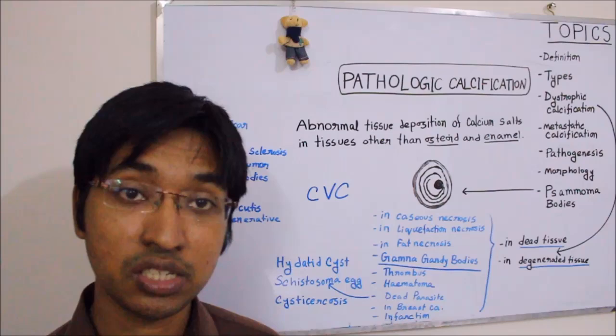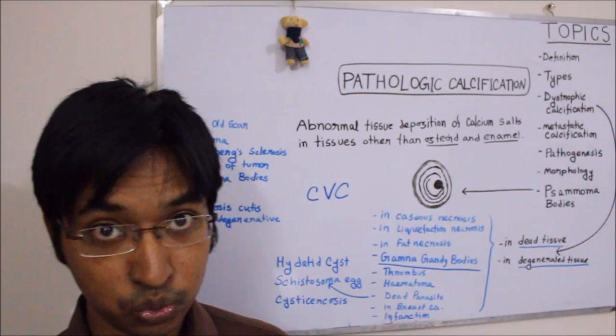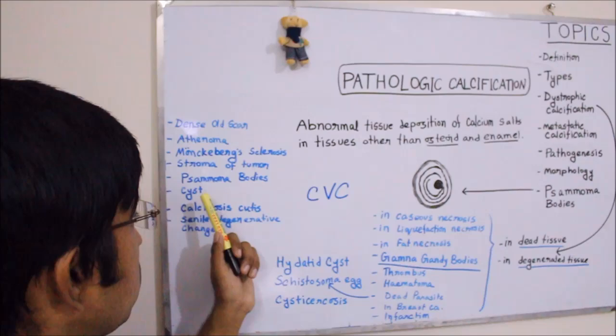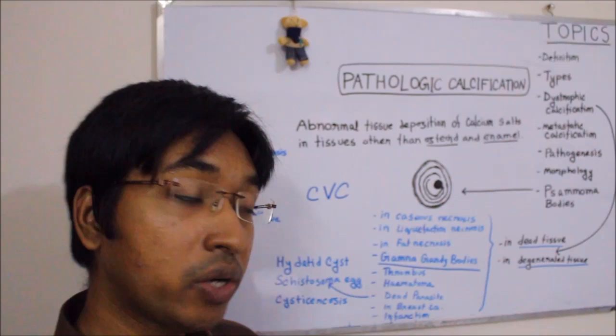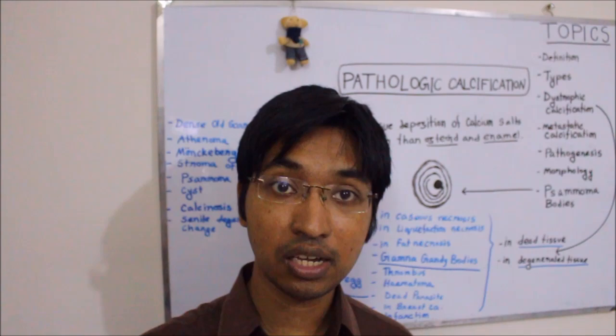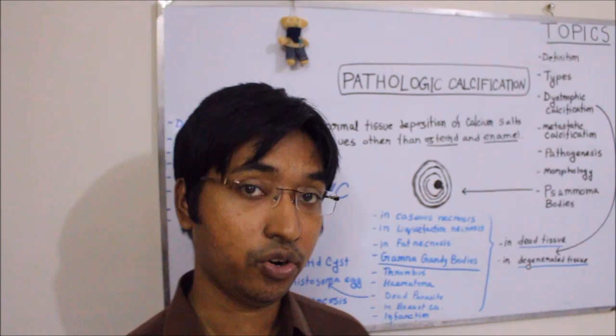The next example is the stroma of a tumour. Dystrophic calcification can happen in degenerated stromal tissue — say for example in a fibroid of the uterus, or in case of thyroid adenoma, or even in goiter, we can sometimes see dystrophic calcification in the stroma. Also, in certain tumours there is calcification in a laminar fashion where there are spherules of calcification, and those are known as psammoma bodies. We will talk more about this shortly.